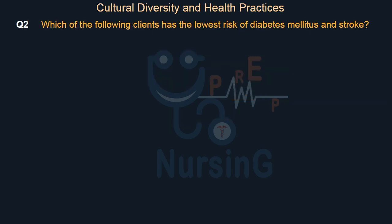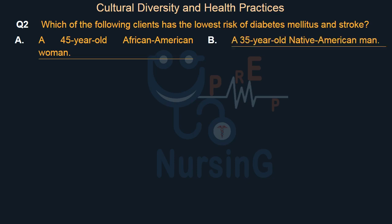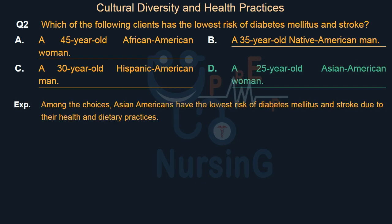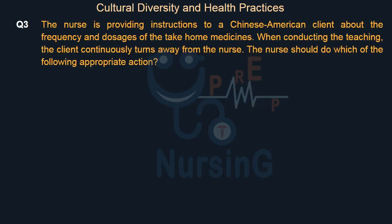Which of the following clients has the lowest risk of diabetes mellitus and stroke? Option A: A 45-year-old African-American woman. Option B: A 35-year-old Native American man. Option C: A 30-year-old Hispanic-American man. Option D: A 25-year-old Asian-American woman. Among the choices, Asian-Americans have the lowest risk of diabetes mellitus and stroke due to their health and dietary practices.